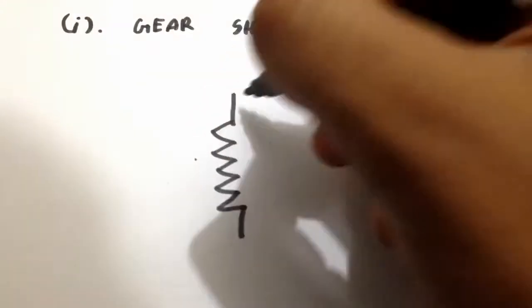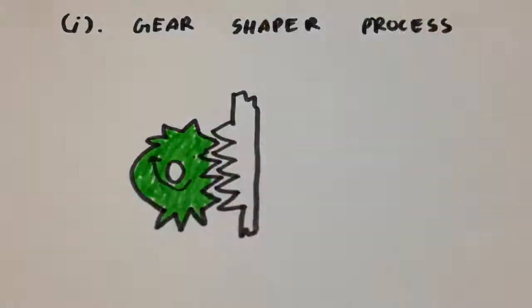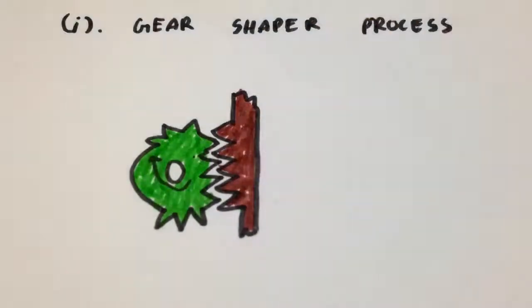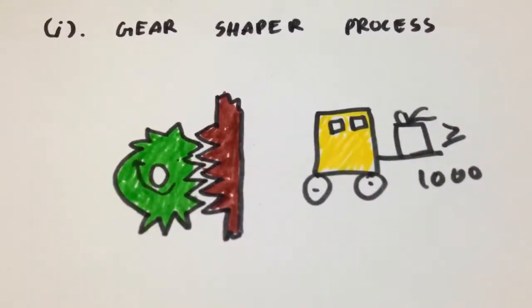First, gear shaper process. A pinion shaped cutter is used in the process which carries the tooth profile to be cut. A gear blank is introduced by the help of sliding head and is cut using the to and fro motion. It is suitable for medium and large size batches.